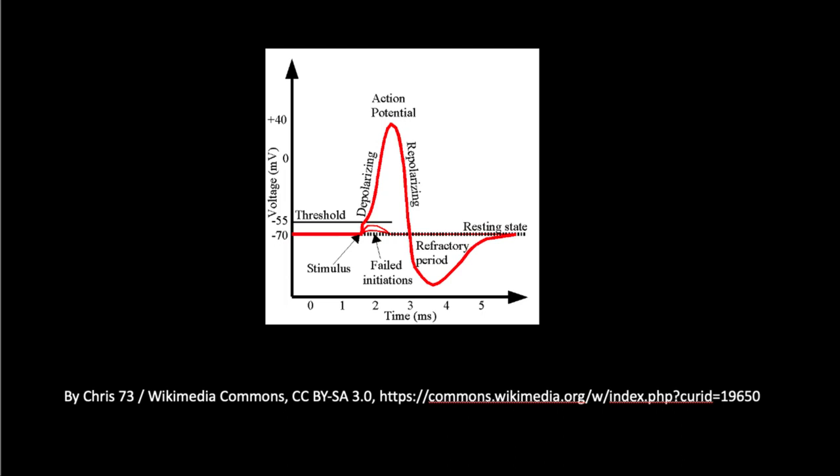In a typical action potential in a normal neuron, you have depolarization, repolarization, hyperpolarization, and then return back to the resting state. Now, what is different in an epileptic neuron? Normally you reach the threshold, have a single action potential — depolarization, repolarization, hyperpolarization — and back to the resting membrane potential.